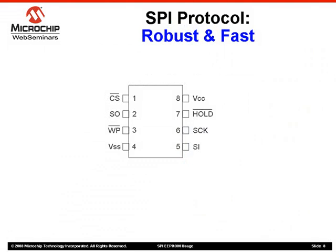Let's look at some advantages of the SPI protocol, which is generally known for its robustness as well as its speed. In this slide, you can see a typical SPI EEPROM pinout. Pin 1 is chip select, pin 2 is data out, pin 3 is write protect, pin 4 is ground, pin 5 is data in, pin 6 is the clock, pin 7 is hold, and pin 8 is voltage.